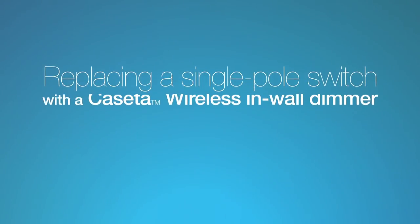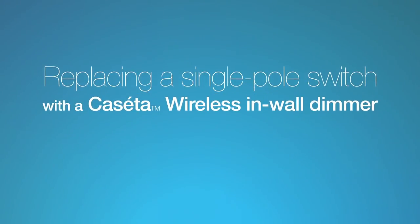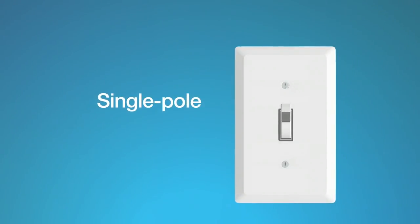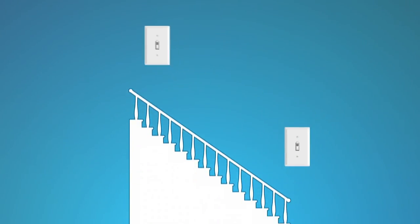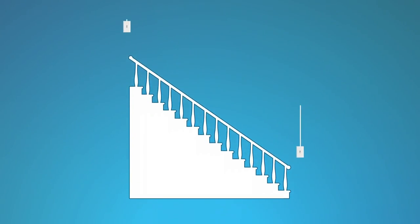Replacing a single-pole switch with a Caseta Wireless In-Wall Dimmer is easy. A single-pole switch is one wall switch that controls a light or group of lights. Lights that are controlled from two or more locations, such as stair lights, use three-way switches. If your light has two or more switches, please watch replacing three-way switches with Caseta Wireless Dimmers.